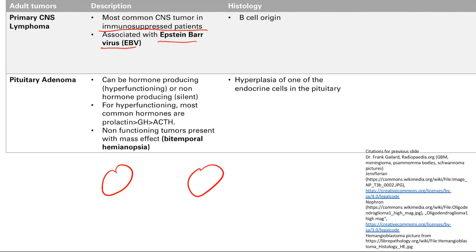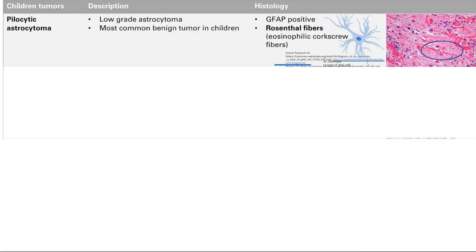With bitemporal hemianopsia, your outside vision is impaired — bi-temporal, both sides, and hemi, half of the vision, is impaired on both sides. On histology, if you cut into it, you're going to see hyperplasia of one of the endocrine cells in the pituitary. The pituitary has different endocrine cells making prolactin, growth hormone, and ACTH. If it's a prolactinoma, you're going to see hyperplasia of the prolactin-making cells.